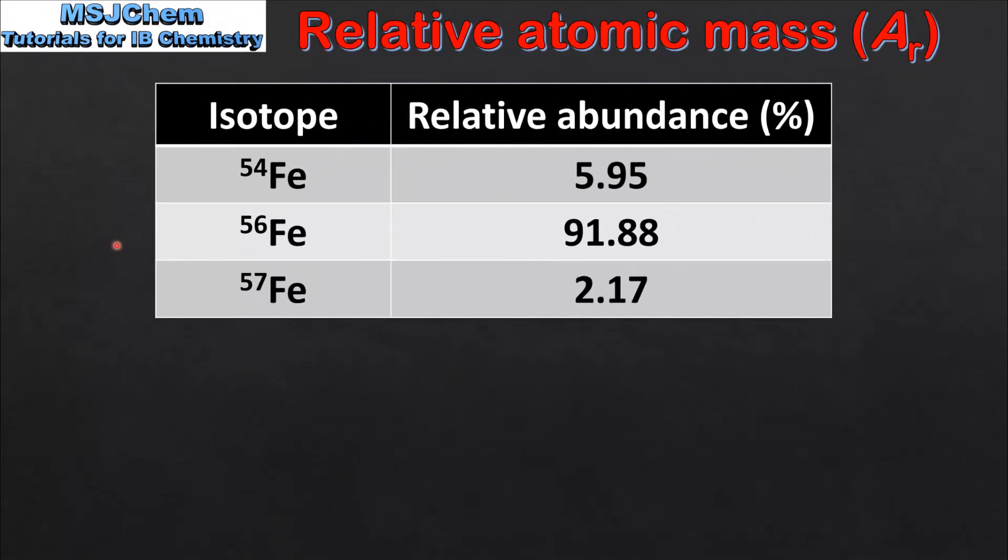In our next example we will calculate the relative atomic mass of iron. So in this table we have the relative abundances of the 3 naturally occurring isotopes of iron which are iron 54, iron 56 and iron 57. And the relative abundances of these isotopes are 5.95%, 91.88% and 2.17% respectively.